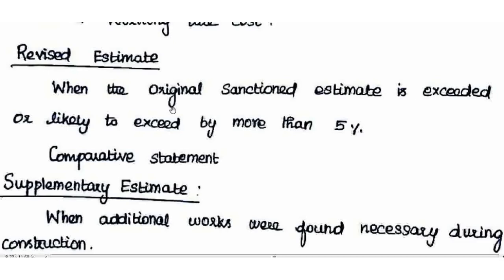Next is Revised Estimate. A revised estimate is prepared when the original sanctioned estimate is exceeded or likely to exceed by more than 5%. A comparative statement must be attached to the revised estimate. The revised estimate documents cost deviations, including any deviation in materials or labor.